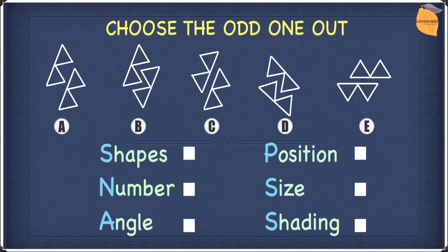So let's use SNAPS to find that answer. SNAPS stands for shapes, number, angle, position, size, and shading. Let's first use shapes. All of the options above have the same shape, so we cannot use shapes.